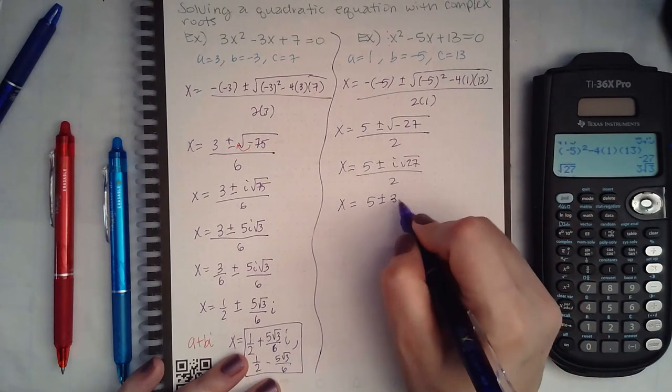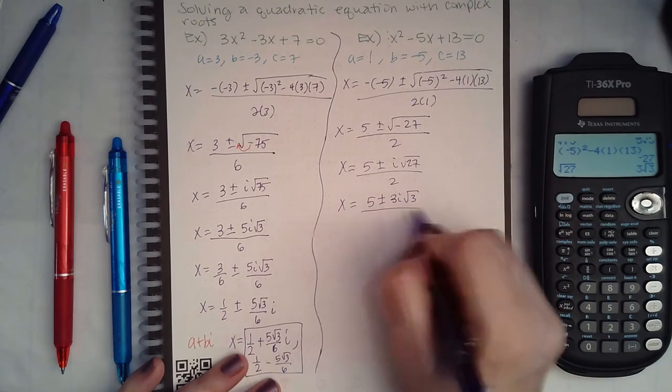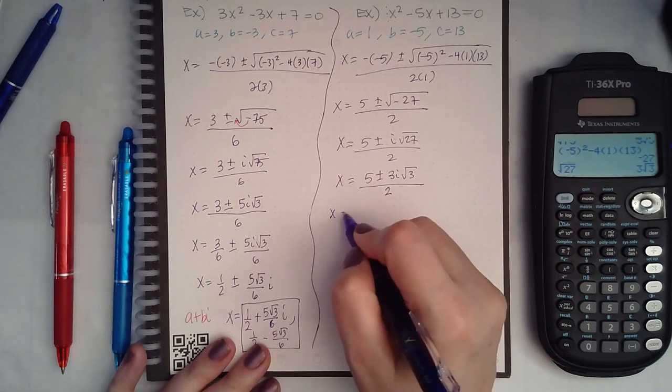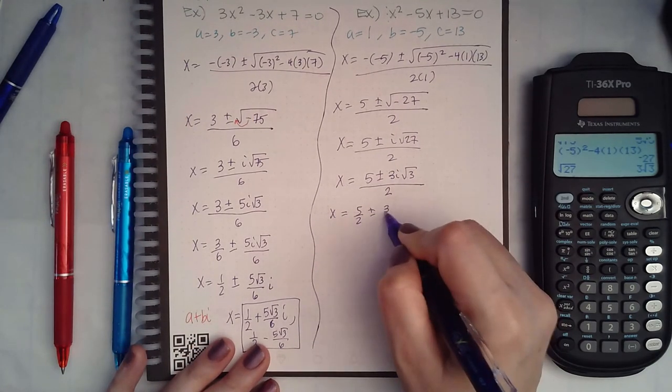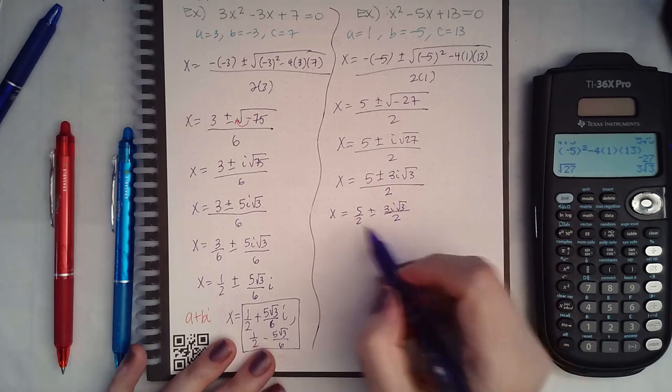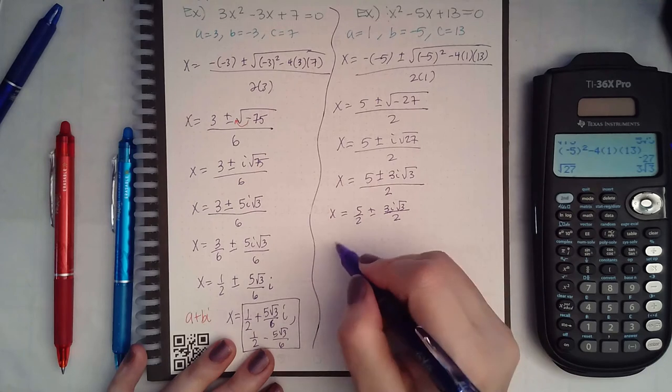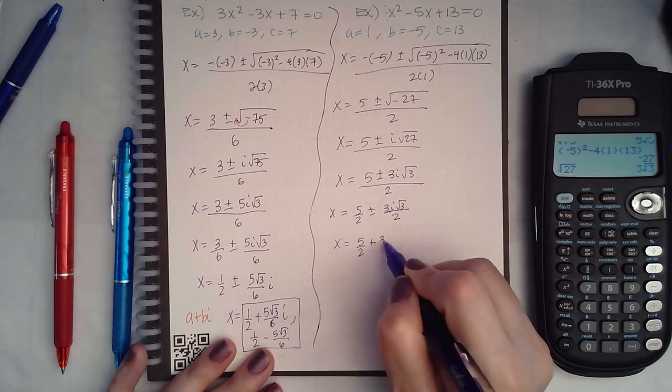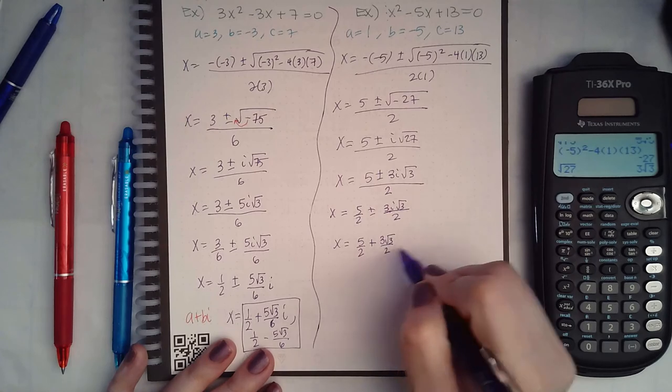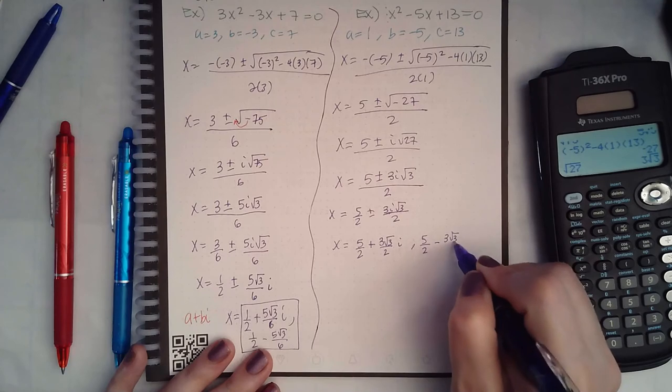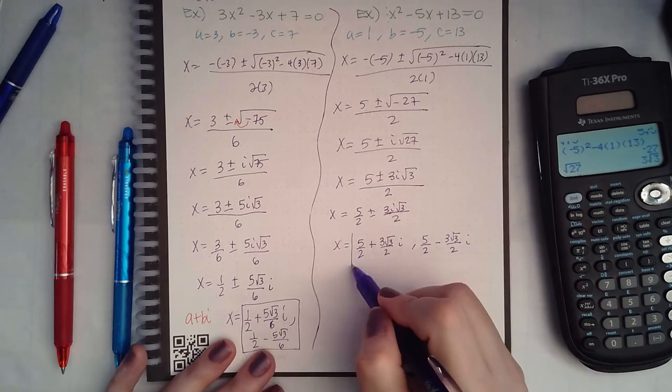Yes, so 3i square root of 3 because the i is also outside, and then we would separate it. This does not simplify, so we have our two answers: 5 over 2 plus 3 square root of 3 over 2 i, and 5 over 2 minus 3 square root of 3 over 2 i.